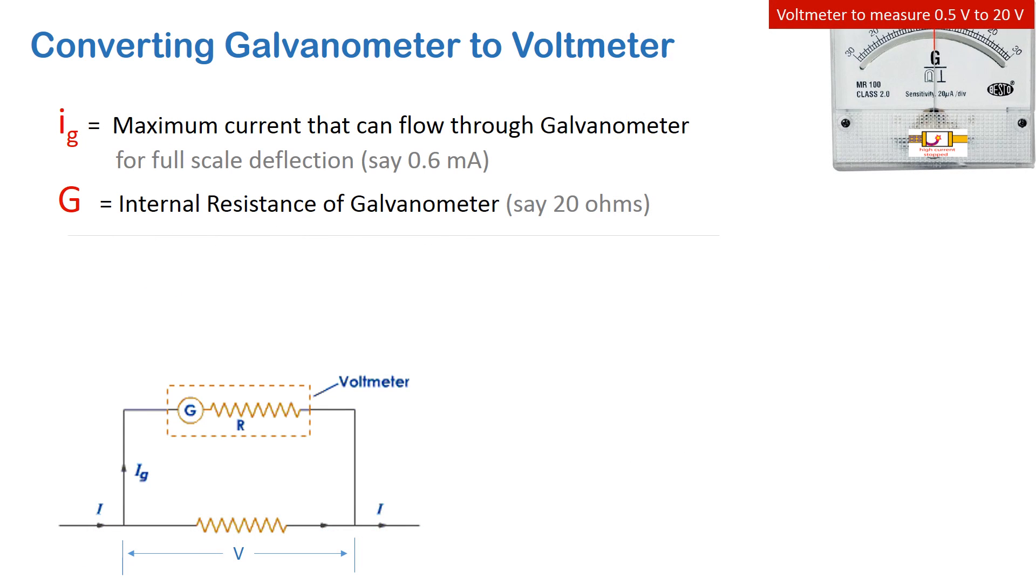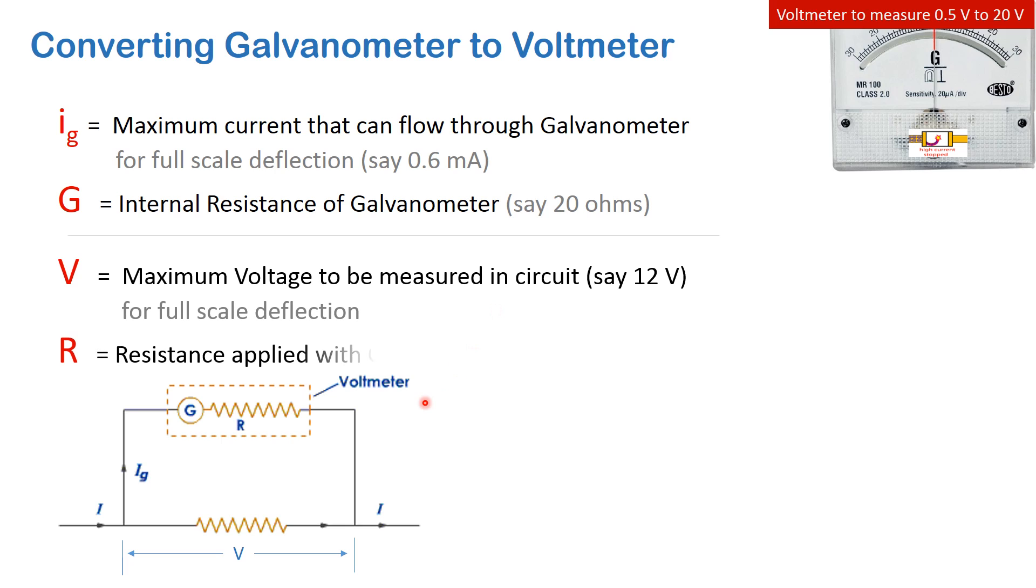Suppose we want to measure a large voltage like 12 volts using the galvanometer here. So we put the galvanometer along with the resistance across the resistance where we want to measure the voltage. The voltage will be same in both the circuits as they are in parallel.